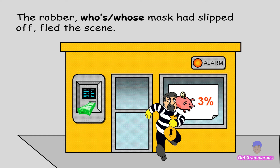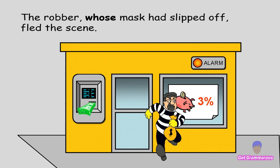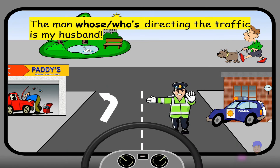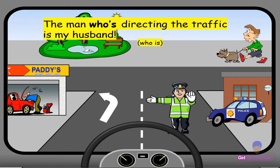'The robber, whose mask had slipped off, fled the scene.' Time's up! The answer is whose — the possessive. Whose modifies 'mask.' Next: 'The man who's directing the traffic is my husband.' The answer is who's — the contraction meaning 'who is.'